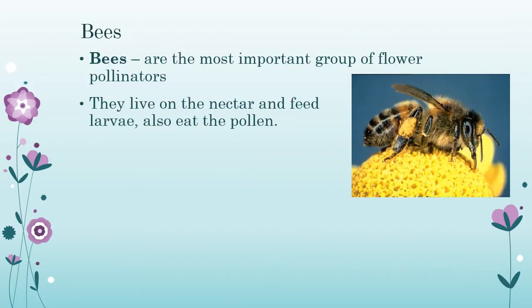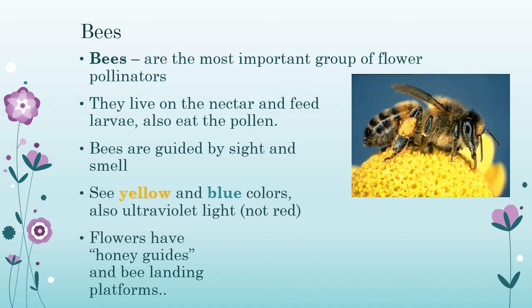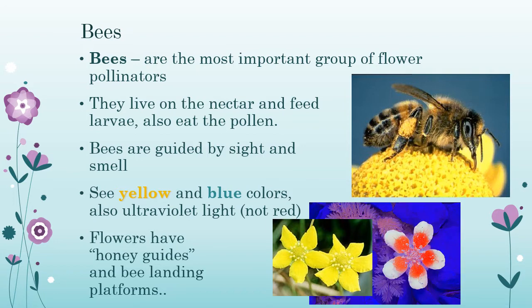Bees are very important pollinators. We can see this bee with the little pollen sacs on its legs. They live on the nectar to feed the larvae but also eat the pollen. They have a good sense of vision and smell, really like yellow and blue colors, and can see ultraviolet light, but they're not good at seeing red. Some flowers have honey guides — little bee platforms they can land on — to hone the bee in on where the pollen is. When you look at this little yellow flower with UV light, it highlights the center so the bee knows exactly where to go.